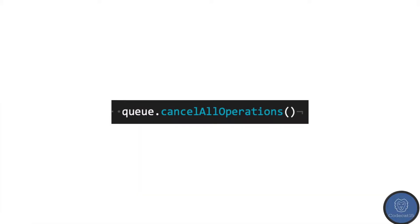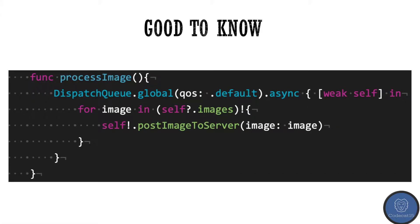Whereas this is not possible with Dispatch Queue — in Dispatch Queue, you don't get any reference to the queue. Now here are a few programming tips for Dispatch Queue. Since it uses closures, we should start with a weak self-reference so that the queue does not hold any strong reference cycles.